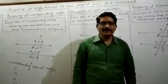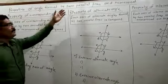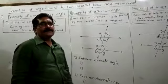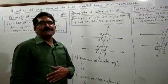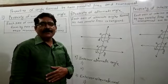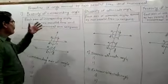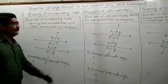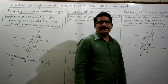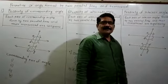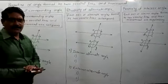Friends, we have to start with a new topic: the properties of the angle formed by two parallel lines and their transversal. Due to the transversal, whatever angles will form, we need to see the actual properties of these angles. What is the property of the corresponding angle, the alternate angle, and the interior angles? When I give examples, you will understand, but now you have to learn the properties.